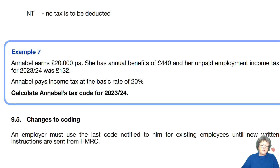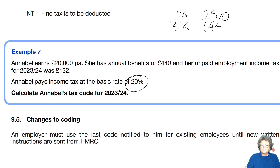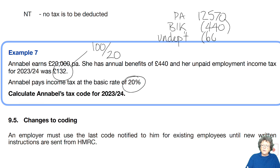Annabelle earns £20,000 and she has benefits of £4,400 and unpaid employment income tax of £132. She's a basic rate taxpayer. She has a personal allowance of £12,570. Benefits in kind need to be deducted, and then the underpayment — there's a calculation where you multiply by 100 and divide by 20, which comes to £660. That gives 11,470. We remove the zero, and her code is 1147L.